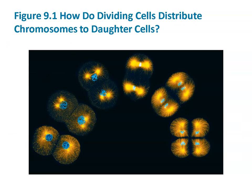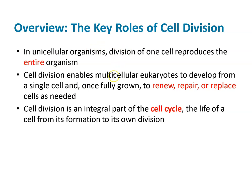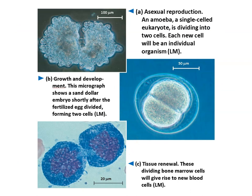In unicellular organisms, cell division reproduces the entire organism — that's asexual reproduction. For multicellular eukaryotes, we renew, repair, and replace. This is all part of the cell cycle, which we'll dive into more in a little bit.